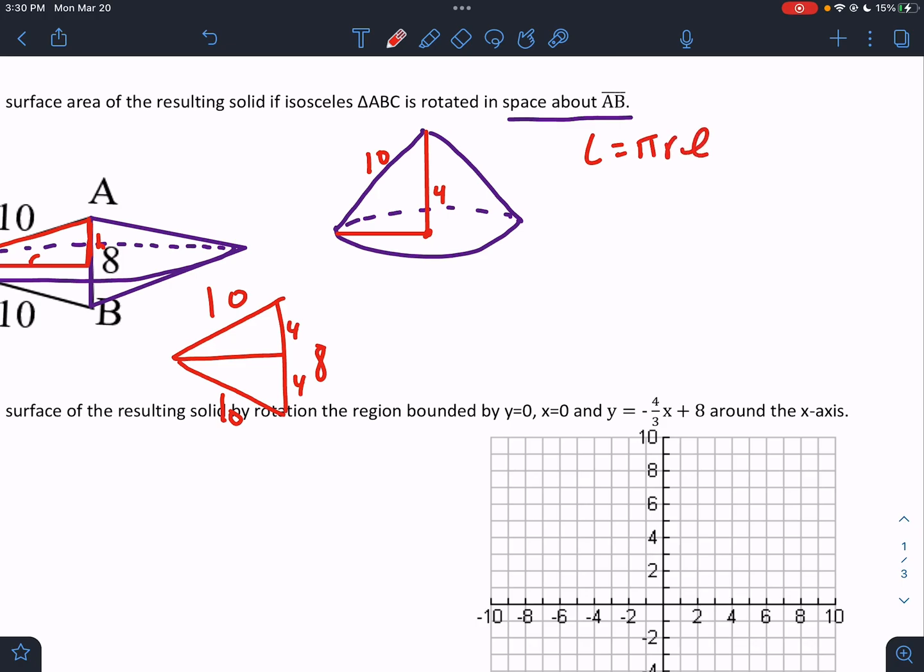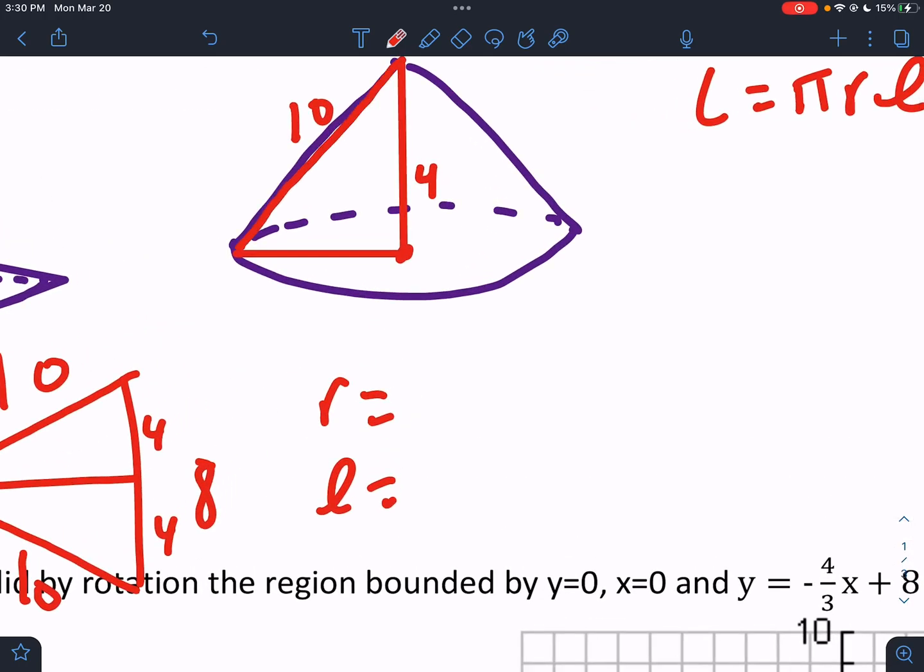So it's going to be the lateral of a cone, which is pi r L. But there's two of them. So we have to double that answer. The radius we don't know. The slant height they gave us. Right? This is the slant height. It's 10. Again, we're going to have to get the radius. We're going to do a quick Pythag.